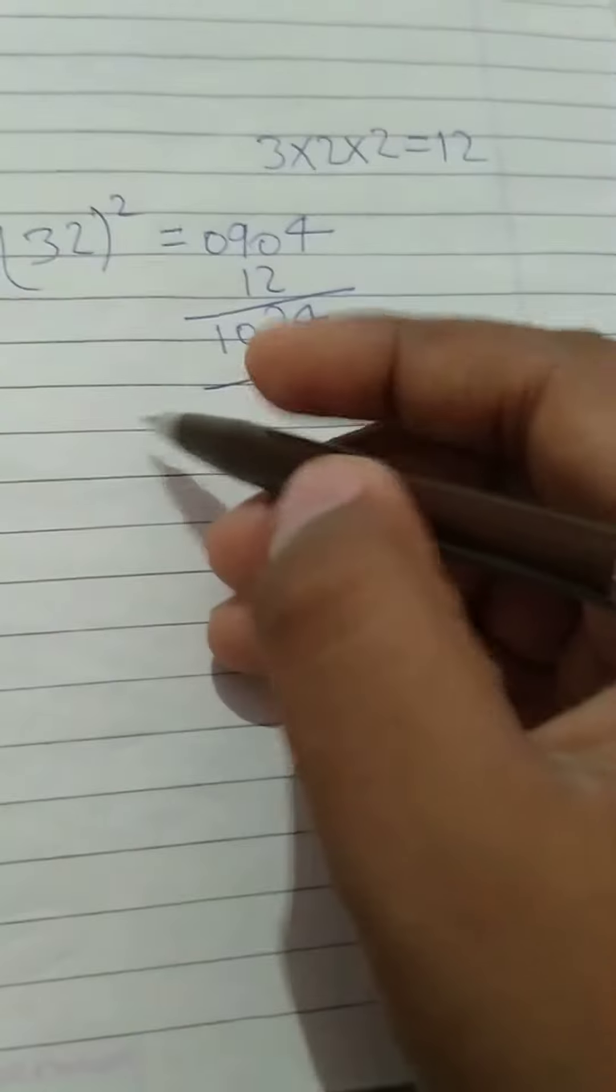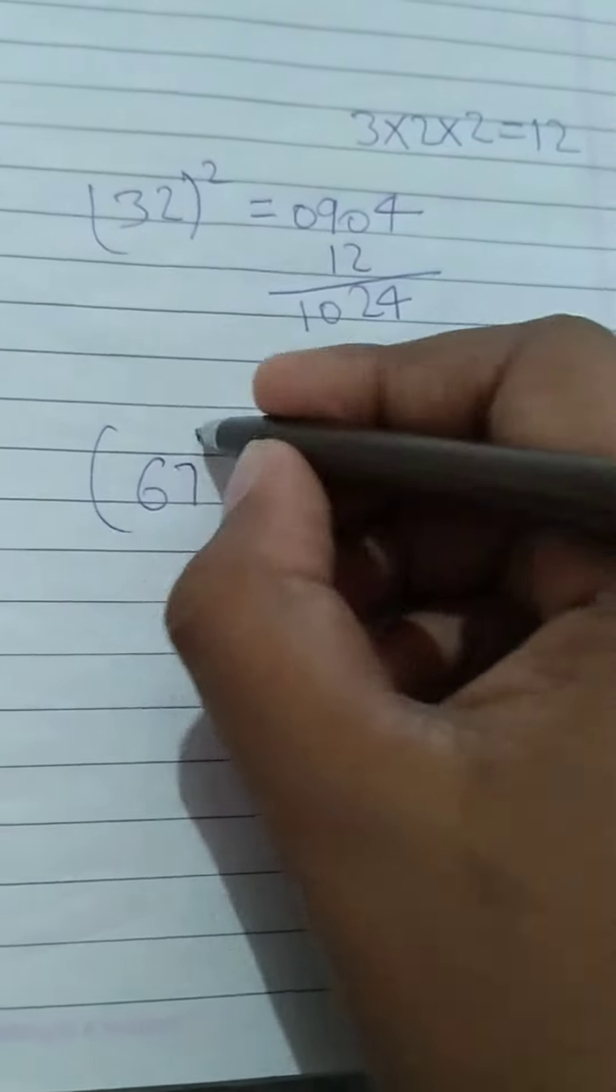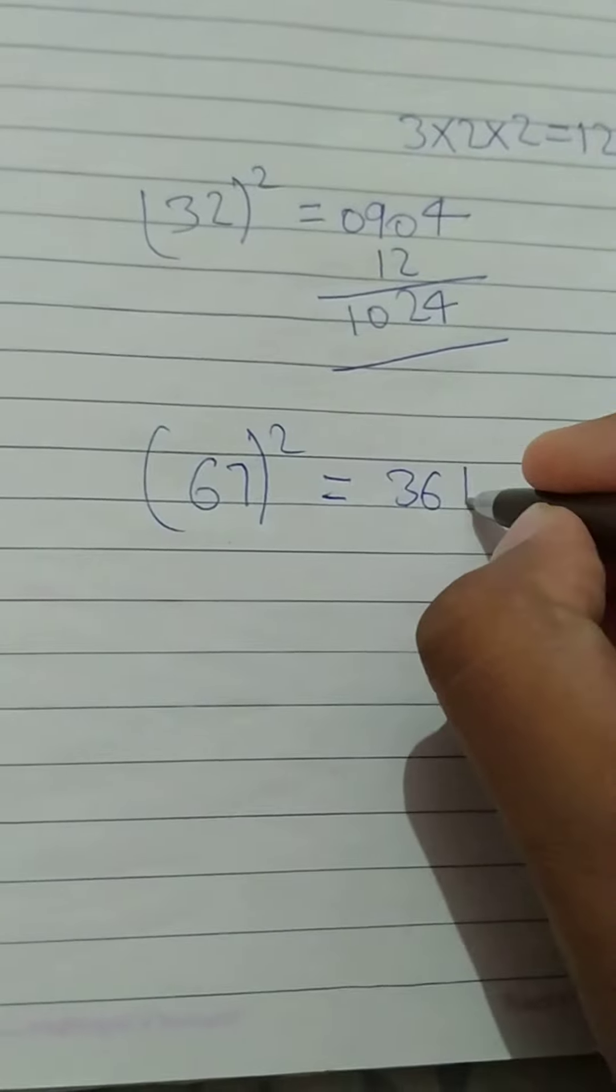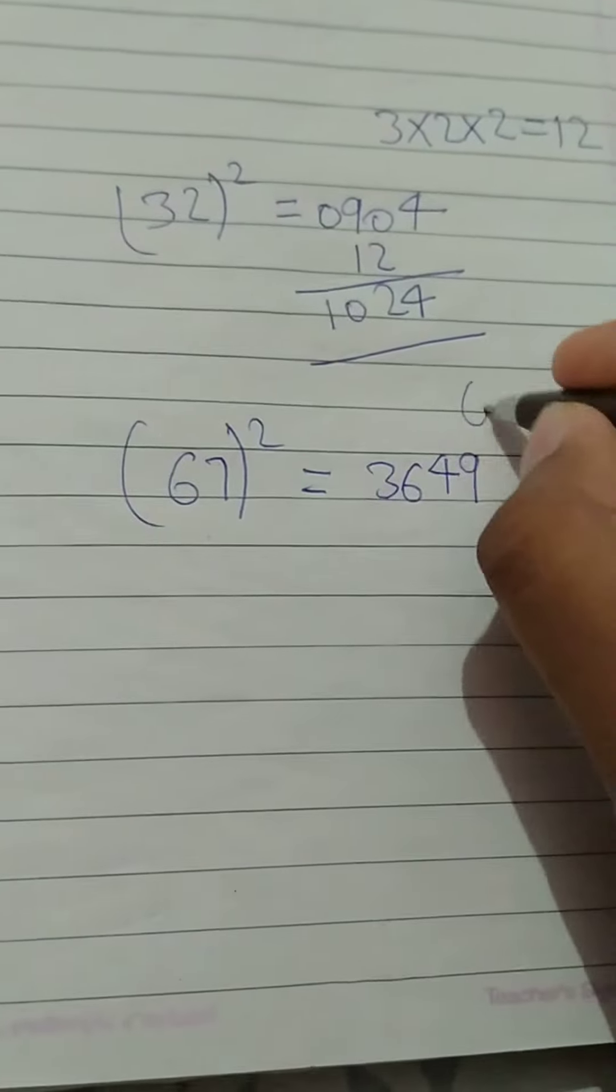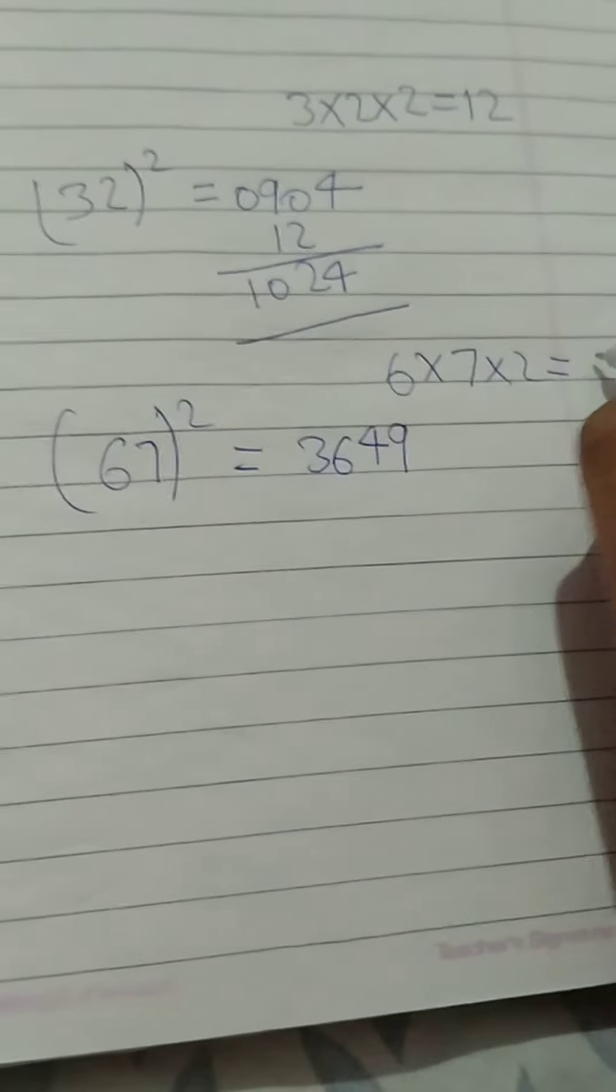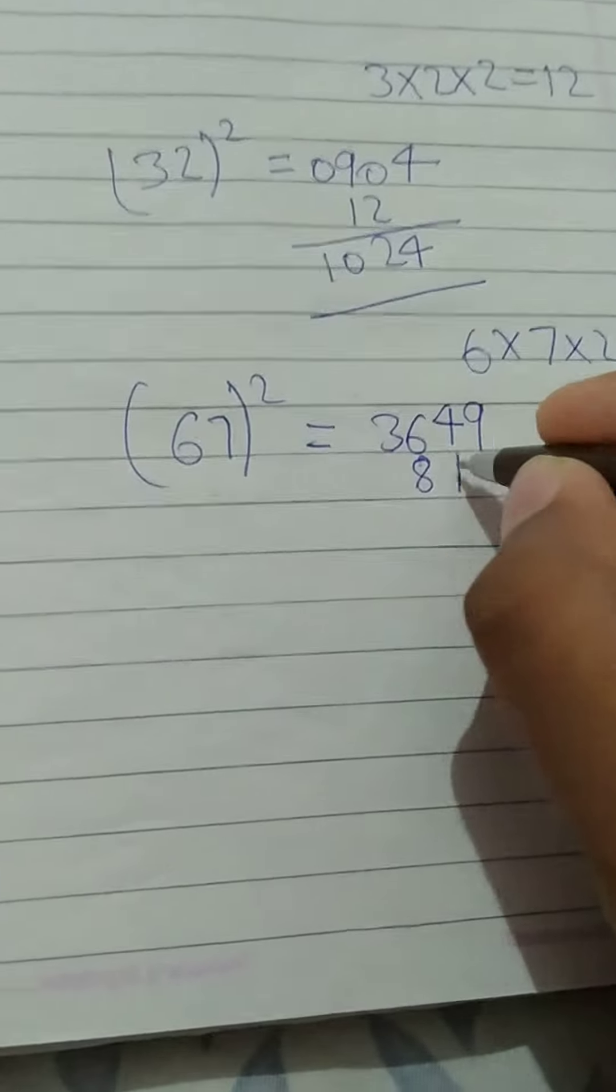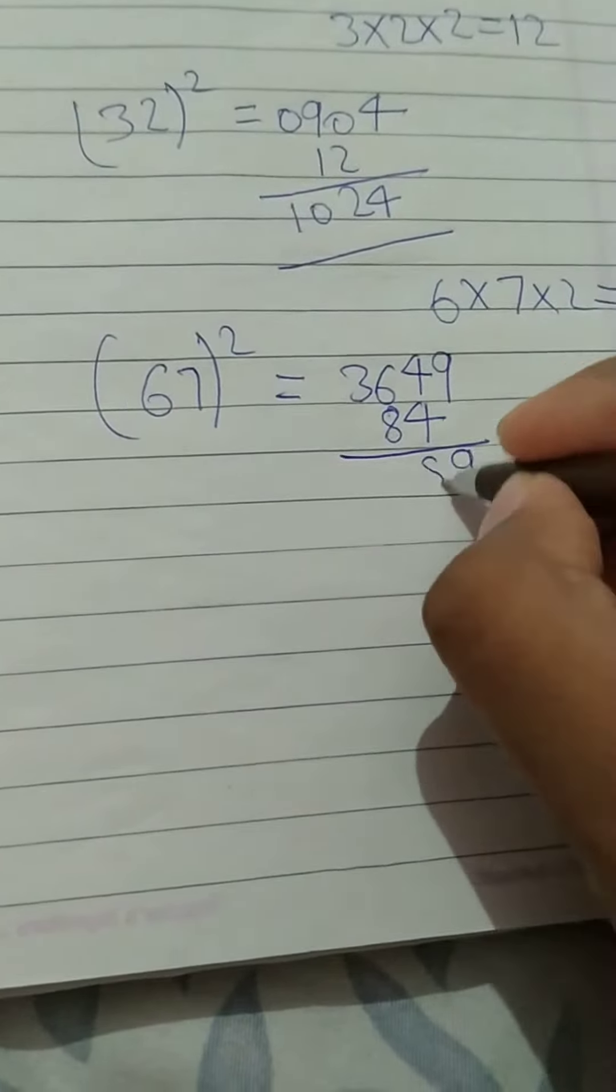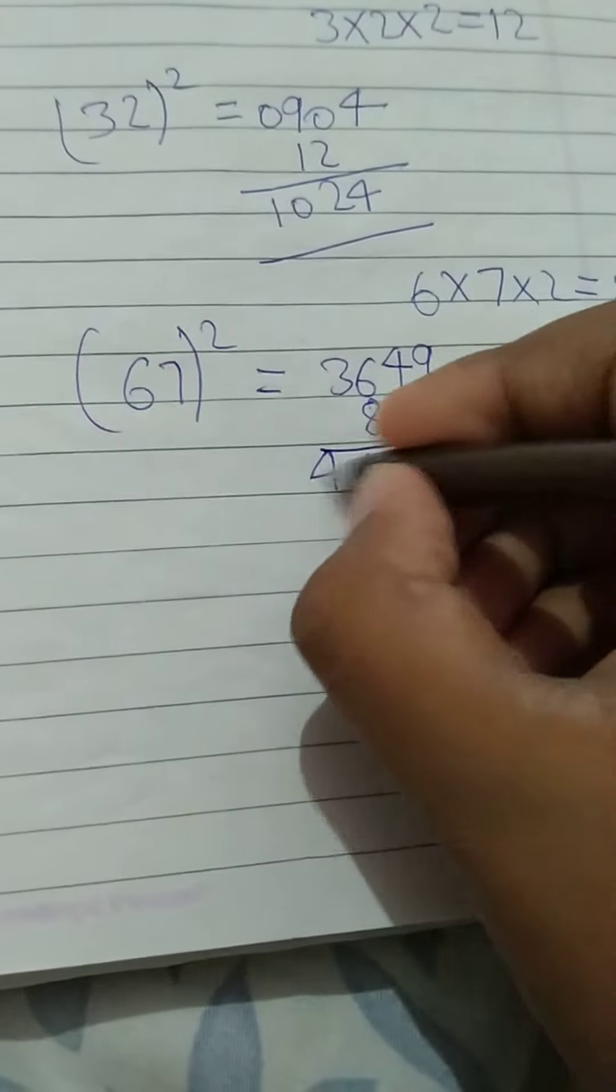Take another number. 67. Square of 6, 36, 7, 49. Multiply 6 into 7 into 2. It is 54. Add it here. This is our answer.